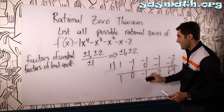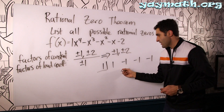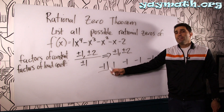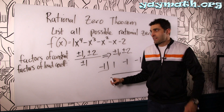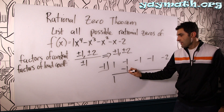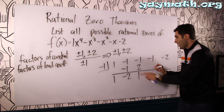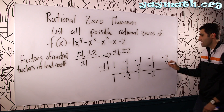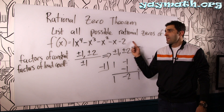Let's try negative one. Again, if it divides evenly, the remainder will be zero — that means negative one is one of our four solutions. Let's hope. Drop the one, negative one — multiply, add, multiply, add, multiply, add, multiply, add. Nice, we found one. So negative one is one of the solutions of this polynomial.